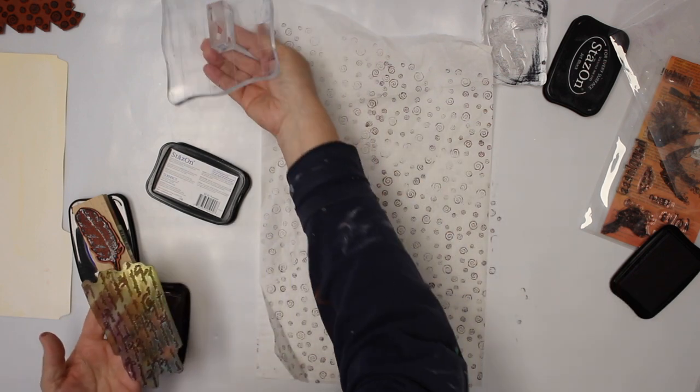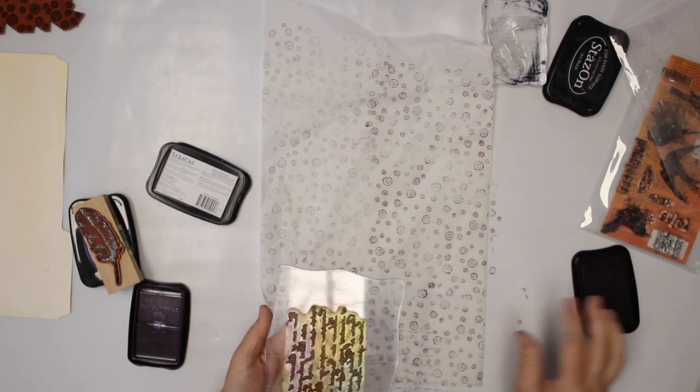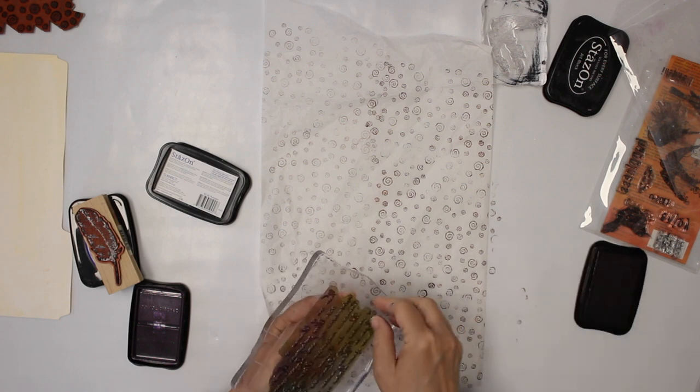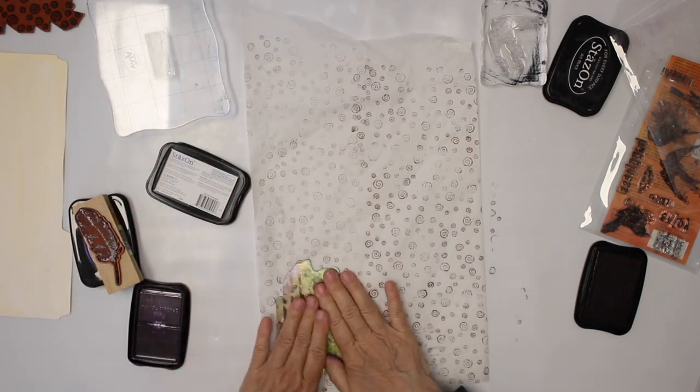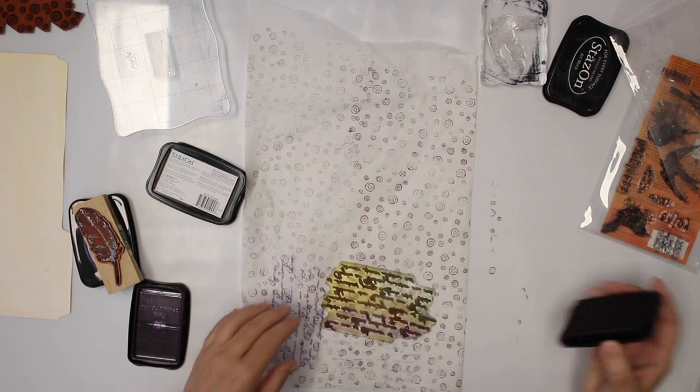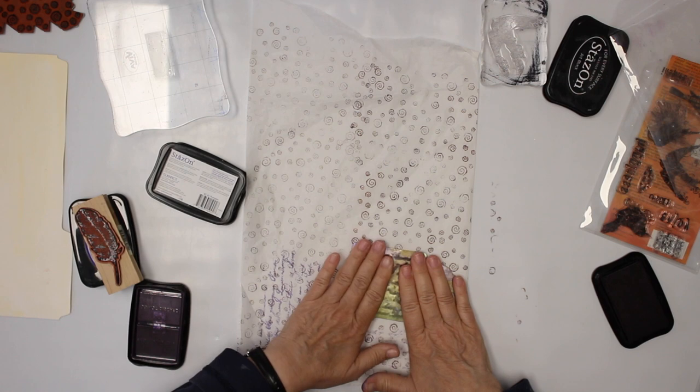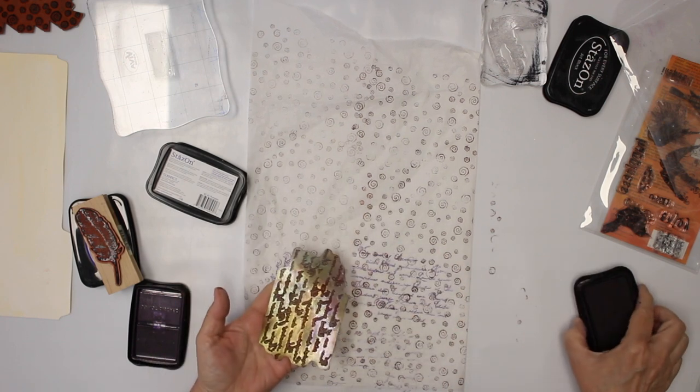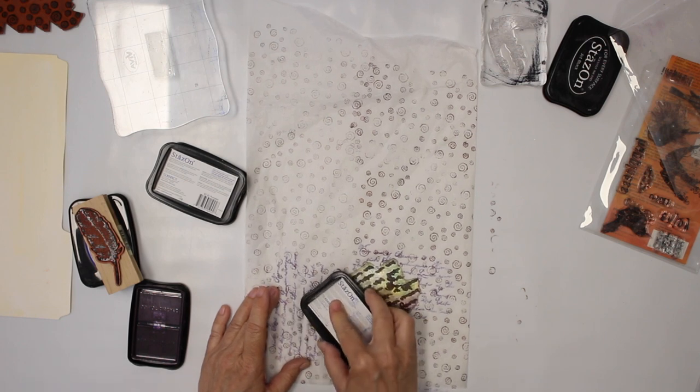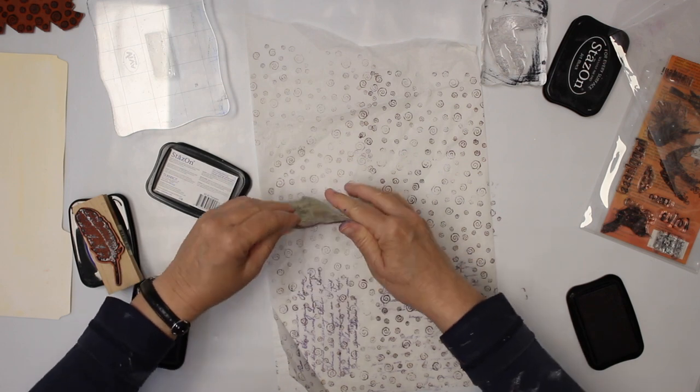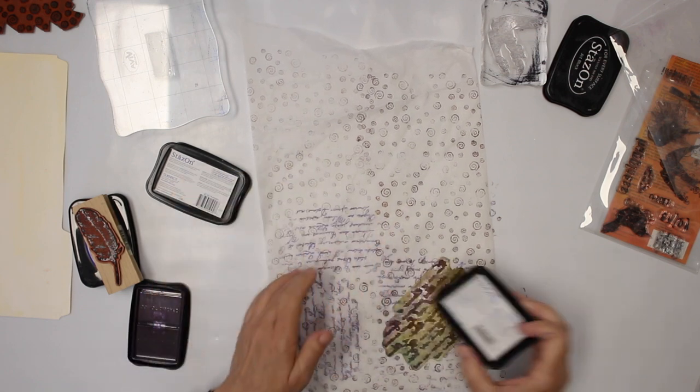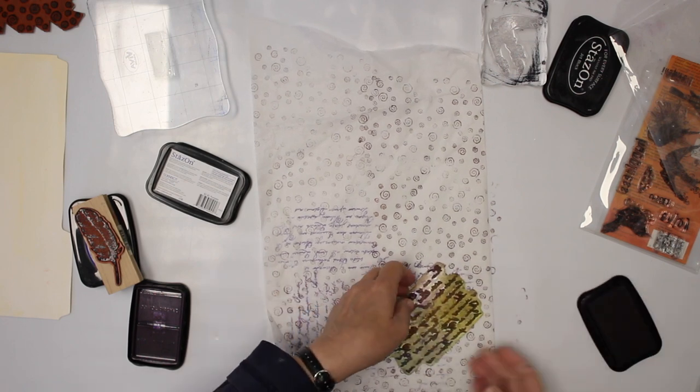So next I'm going to go in with the script stamp. From what I can see, the last time I have used embossing powder, that's why it is so shimmery and that makes it that it doesn't stick to the acrylic block. So this stamp's gonna go in a serious bath afterwards. I just use soap and water.